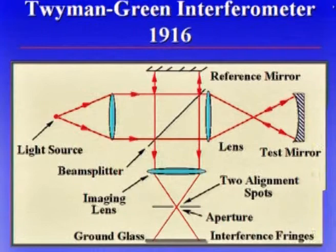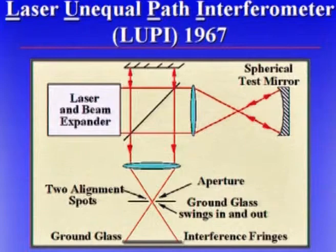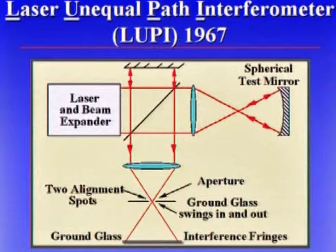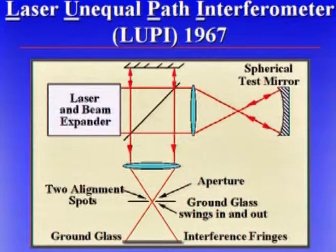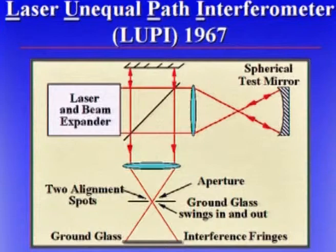In the 60s, the laser came along. Lasers were a nearly ideal source for interferometry and really opened up the applications. This is basically a Twyman-Green interferometer with a laser — sometimes called an equal path interferometer. The major difference now is that the length of one path could be greatly different from the other, and you still get good contrast interference fringes. It made it much easier for people to do interferometry for testing optical components, machine parts, or whatever. That was 1967.